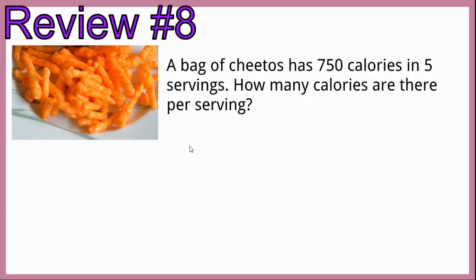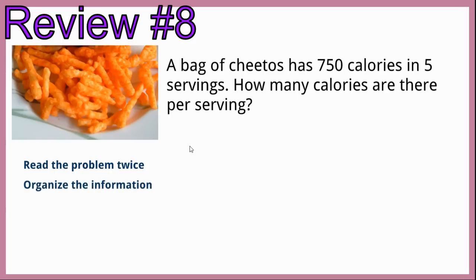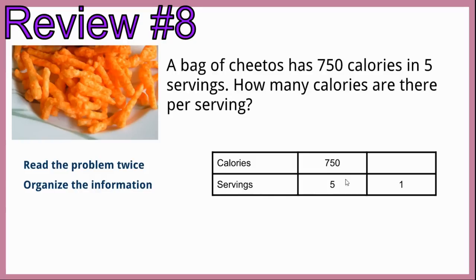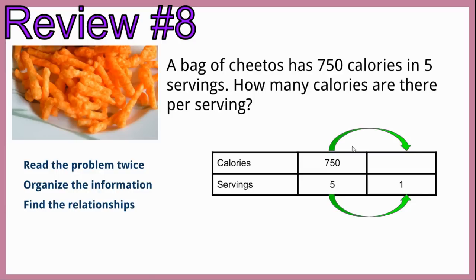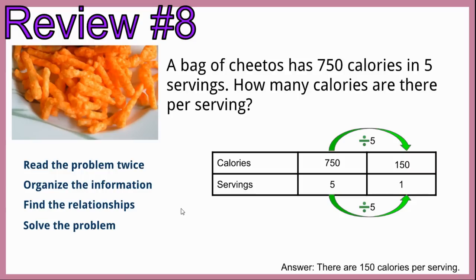Review number eight. A bag of Cheetos has 750 calories in five servings. How many calories are there per serving? Organize information into a table: calories to servings, 750 calories in 5 servings. Per meaning one. We divide both by 5 because 5 divided by 5 is 1. 750 divided by 5 is 150. There are 150 calories per serving.